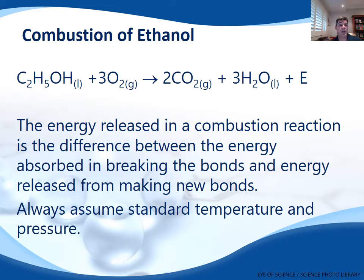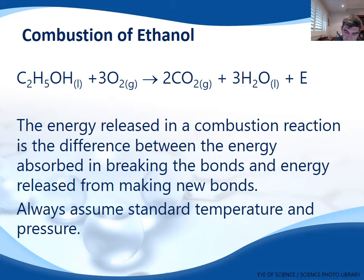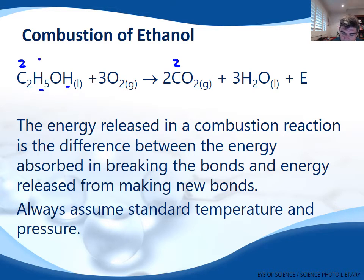We write an equation for the combustion of ethanol, and you're always going to be trying to write equations as much as possible. We need to make sure our equation is balanced. So we have two carbons on the left side and two on the right. We have five and one — which is six hydrogens on the left — and three twos, six, on the right.